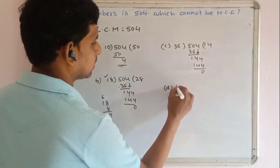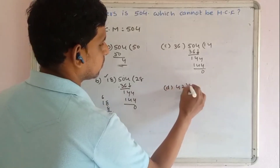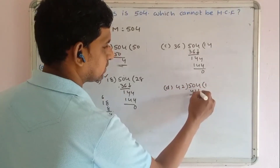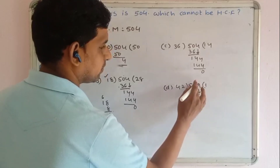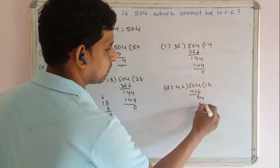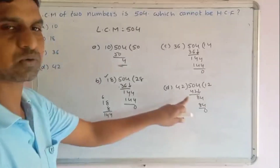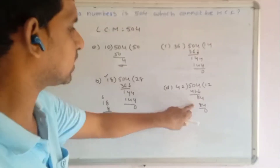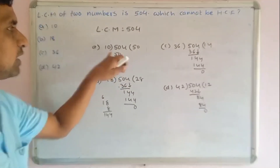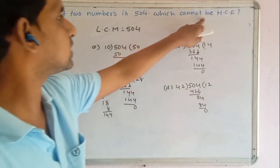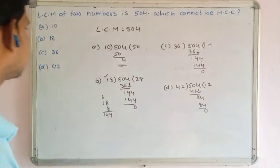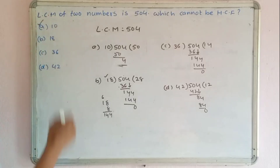Checking option D: 42. 504 divided by 42: 50 minus 42 is 8, and 42 times 12 is 84, giving remainder 0. So 42 is exactly divisible. Since 10 is not exactly divisible by 504, 10 cannot be the HCF. The answer is 10.